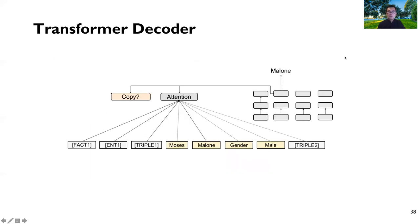For our decoder, we use a transformer-based decoder and incorporate a copying mechanism so the decoder can decide whether to copy or generate. We pay attention to the graph encoder, which encodes entity, factual, and triple information that encodes very rich relationships about entities in our graph.